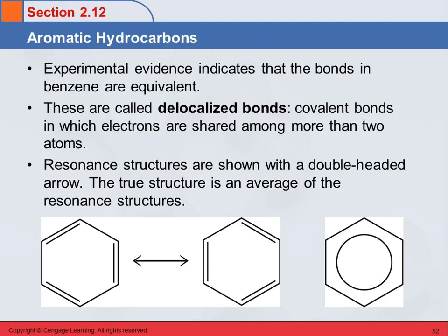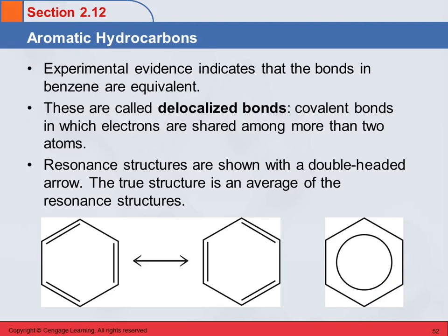The experimental evidence indicates that all those bonds in benzene are equivalent — they're the same. So the alternating double and single bond thing doesn't work. The way we describe it is that these are delocalized bonds. There is a single bond between each carbon, but then the double bond is delocalized. Instead of the electrons being shared between two carbons, they're shared across more carbons. A more accurate description is the hexagon with a circle in it.